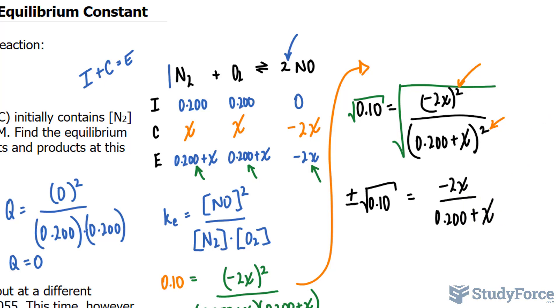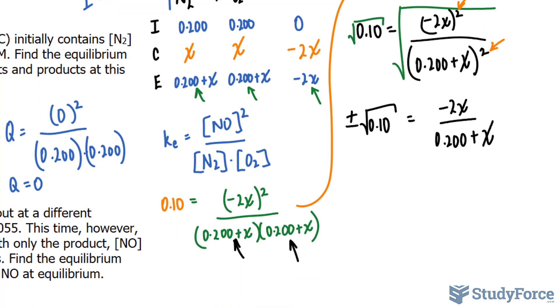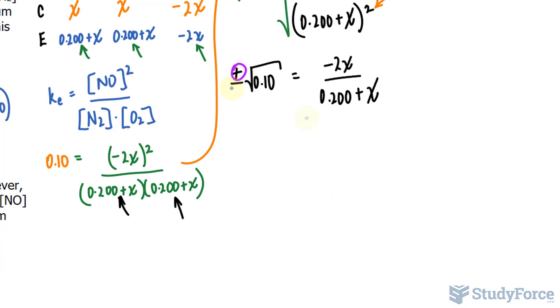By square rooting both sides, this technically makes the solving process a lot easier. Now this doesn't always happen. In many other examples you have to use the quadratic formula, but luckily this one's a little easy. Technically you should be getting two answers here because we have to do the next set of calculations for the positive version and the negative version of this number. Let's begin with the positive version. To solve for X, we first multiply both sides by the bottom. So 0.200 plus X times the positive version of this expression is equal to negative 2X. By multiplying both sides by this expression, it actually cancels it out on the right side. Then we expand.